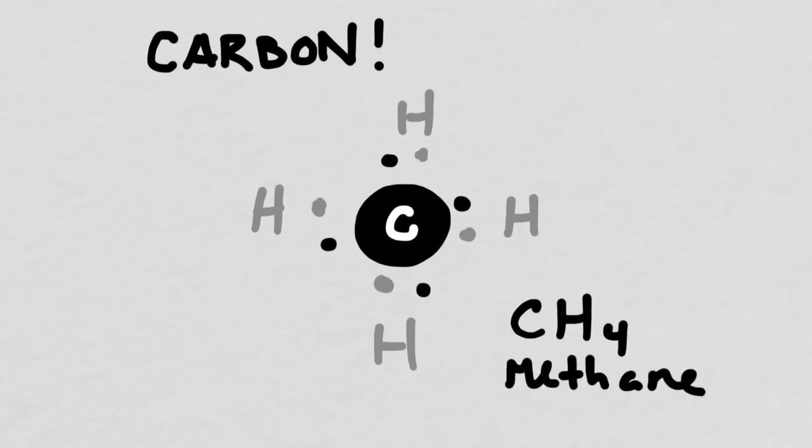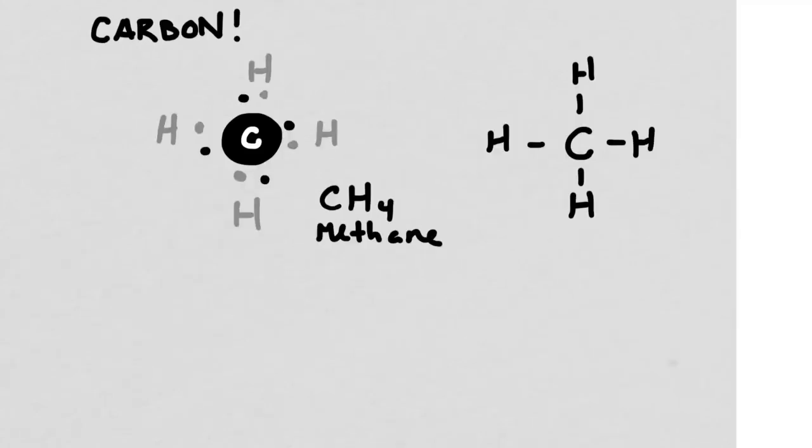If we were to add a hydrogen, which has one valence electron, to the outside like this in four different places, we would actually form a compound that's called CH4, and that's also known as methane. We could diagram this using a dot diagram like we have on the left, or we could use a line diagram like what we have on the right. On the right, we don't actually draw in the valence electrons. They're implied. We only draw in the atoms and the bonds.